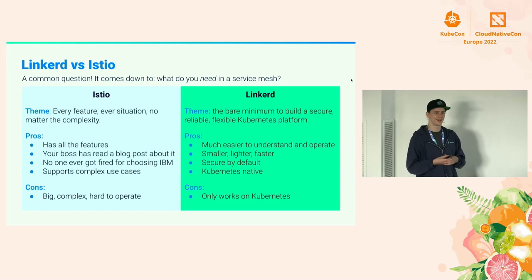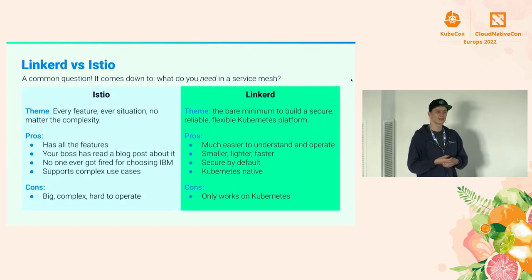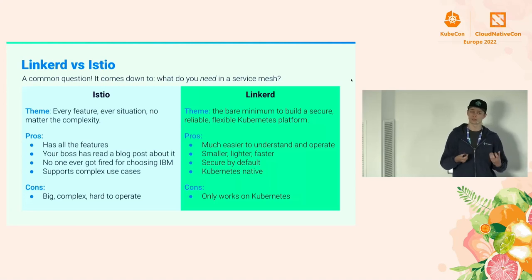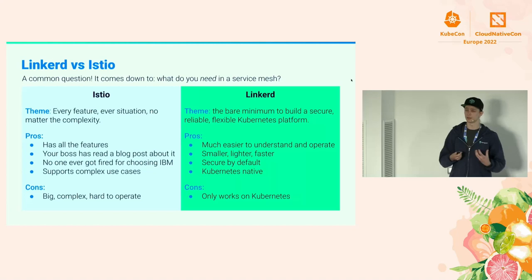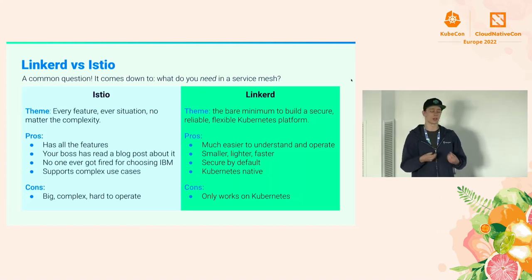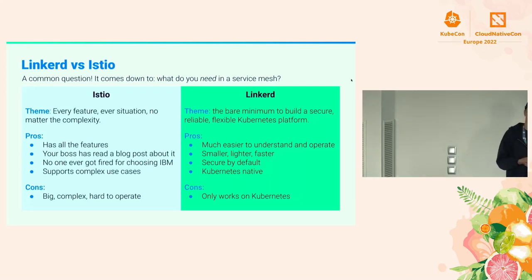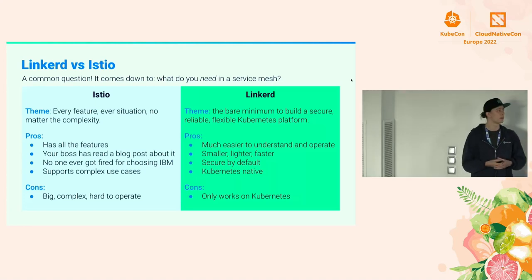A question we often get is: how does Linkerd compare to Istio? It really depends on your production environment and what you want to do. Istio is built for feature parity — they add a bunch of features and you can do a lot of cool stuff, but that comes at a cost of complexity. You have a bunch of CRDs to manage and a bunch of things to learn. On the other hand, Linkerd uses the bare minimum to build a secure and reliable Kubernetes platform, leveraging almost entirely Kubernetes primitives like endpoints and services.